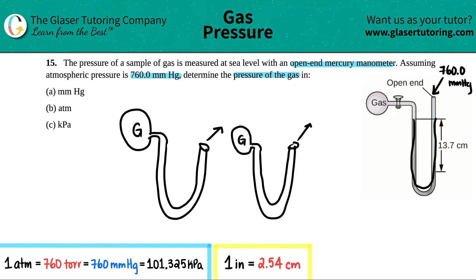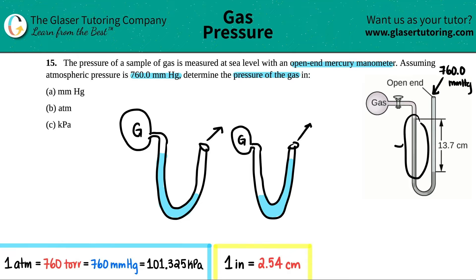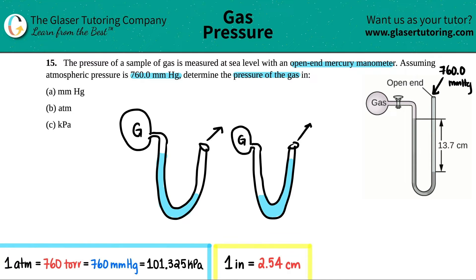There are two possible configurations: the mercury level on the gas side could be higher than on the atmosphere side, or the atmosphere side could be higher than the gas side. In our case — looking at the drawing — the higher side is toward the gas and the lower side is toward the atmosphere.